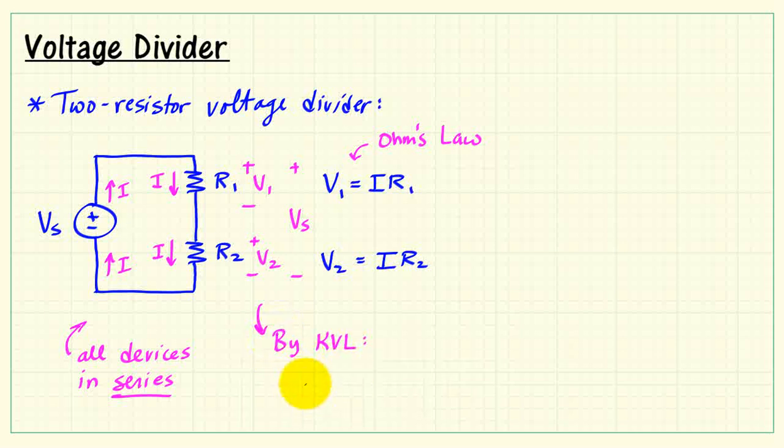And this is the essence of the voltage divider. We see that VS is basically partitioned into the two voltages, V1 and V2. Kirchhoff's voltage law tells us that VS equals V1 plus V2.